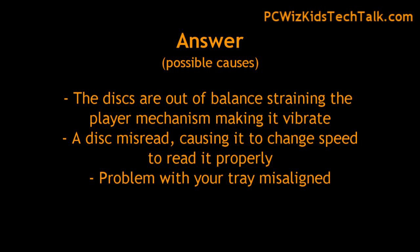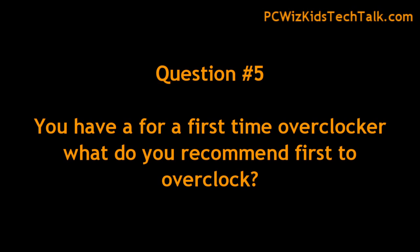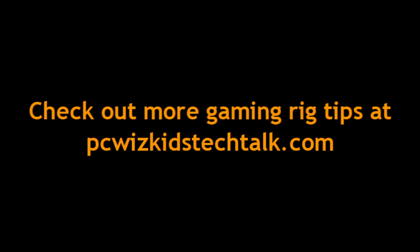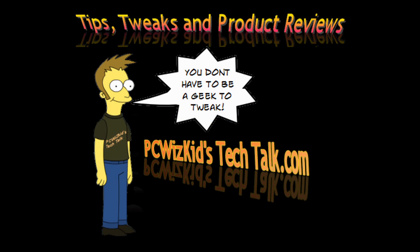Question five: for a first-time overclocker, what do I recommend overclocking first? Start with the CPU — go into the BIOS and increase the megahertz slowly. Watch my overclocking 101 videos I created, which take you step by step on how to overclock your CPU. After that, do your memory, and then your graphics card if you want. Keep your questions coming and thank you for watching!